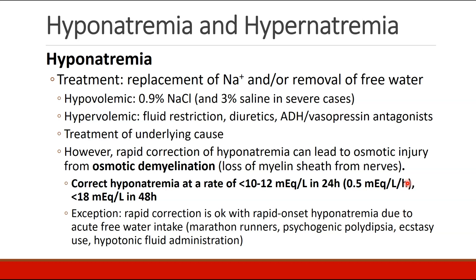Ultimately you want to treat the underlying cause. But keep in mind that rapid correction of hyponatremia can also be dangerous, as it can lead to osmotic injury from osmotic demyelination — that is, loss of the myelin sheath around the nerves. In general, we correct hyponatremia at a rate of about less than 10 to 12 milliequivalents per liter in 24 hours, which comes out to about half a milliequivalent per liter per hour.